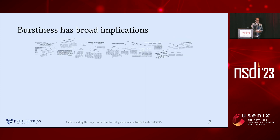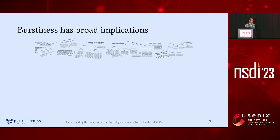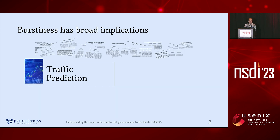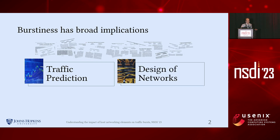Network traffic burstiness has been the center of attention for the networking community because of its important implications. First, it has been shown that bursty traffic at long timescales can be predicted and accounted for. Second, understanding burstiness can allow us to tune network parameters such as buffer sizes. Burstiness has also been shown to lead to increased delays and loss for network services.